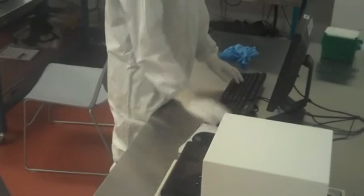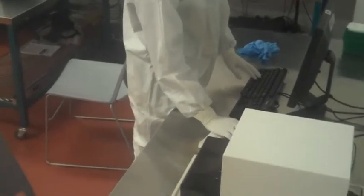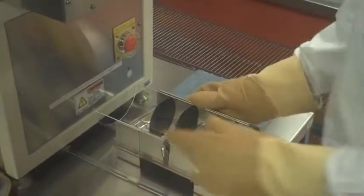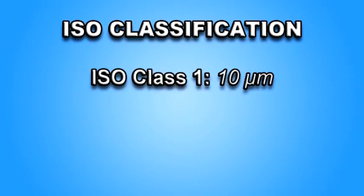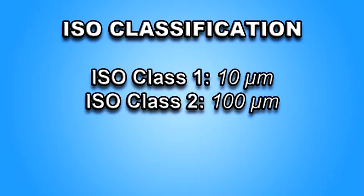Before entering the cleanroom, it's important to know the separate types of classifications that can define a cleanroom. The ISO classification system is one way in which cleanrooms can be defined. Every cleanroom is defined in ISO class based on the number of particles in the air. A cleanroom with an ISO class of 1 would be allowed only 10 micrometer-sized particles in the room at all times. An ISO class 2 would allow 100 micrometer-sized particles.